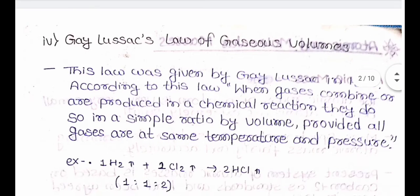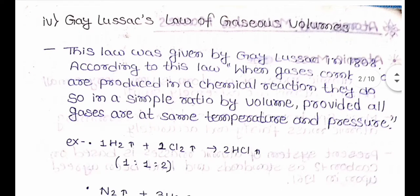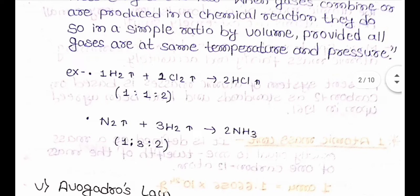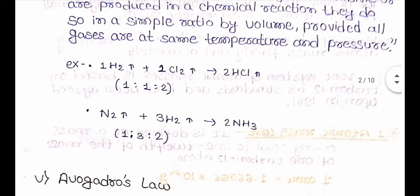The fourth law is Gay-Lussac's Law of Gaseous Volume. This law was given by Gay-Lussac in 1808. According to this law, when gases combine or are produced in a chemical reaction, they do so in simple ratios by volume, provided all gases are at the same temperature and pressure. Example: 1 mol H₂ + 1 mol Cl₂ → 2 mol HCl, ratio 1:1:2. And N₂ + 3H₂ → 2NH₃, ratio 1:3:2.